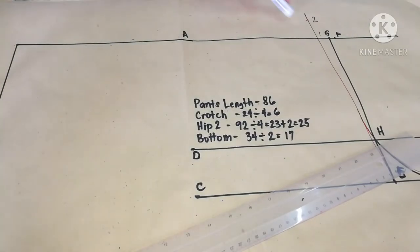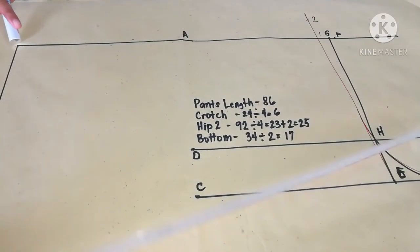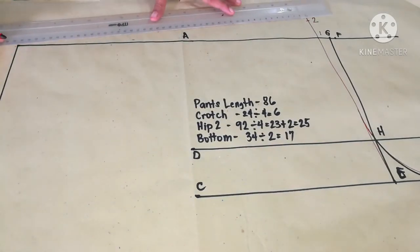Then connect point 2 to this point. This point is the corner of waist and front crotch.